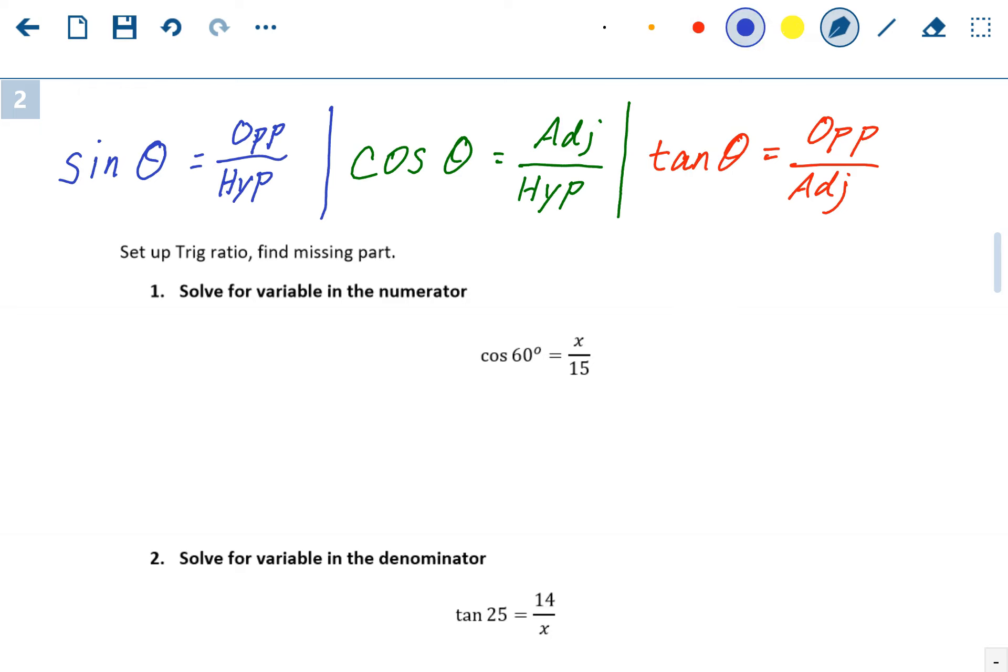A lot of people use the acronym SOHCAHTOA, where each first letter represents the trig function and the second two letters represent the sides of the triangle. So you will have to memorize that.